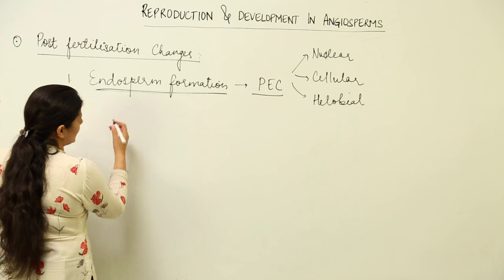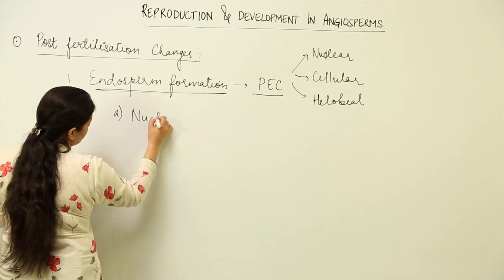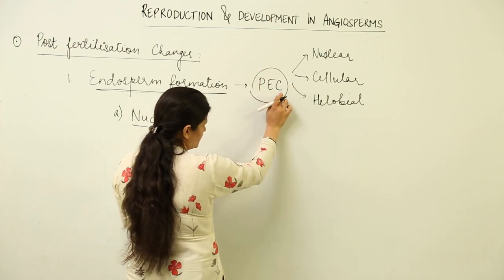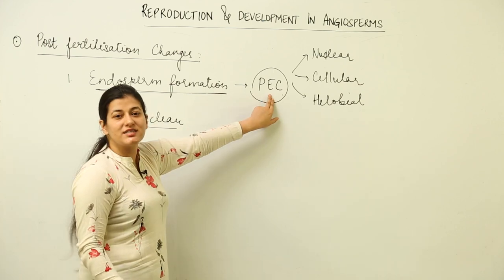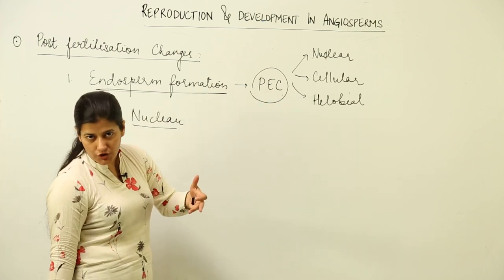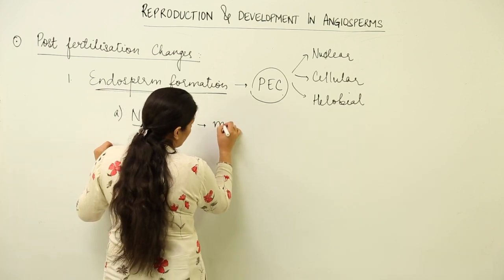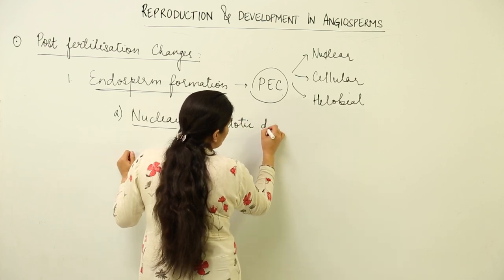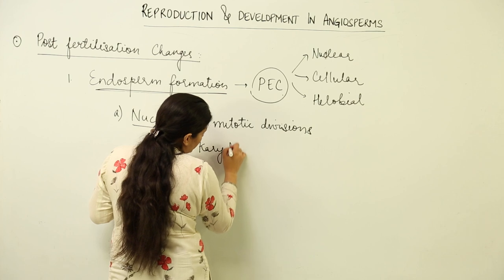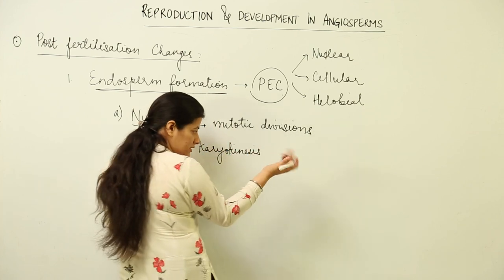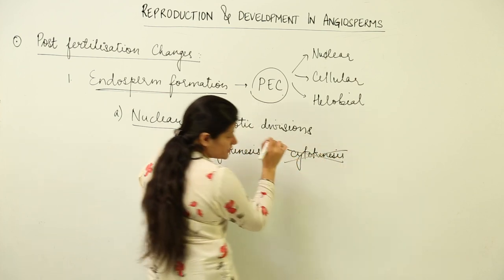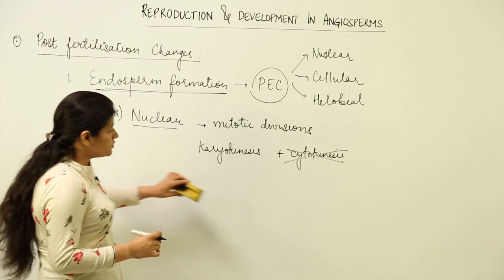The first type is nuclear endosperm. In nuclear endosperm, the first cell of the endosperm is the primary endosperm cell. This cell undergoes repeated mitotic divisions, but these divisions are not followed by cytokinesis. That means karyokinesis is taking place — many nuclei are being formed — but cytokinesis is absent. The condition that arises is that of a syncytium.